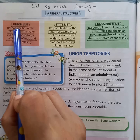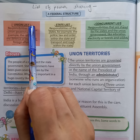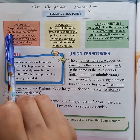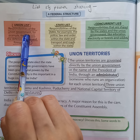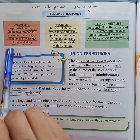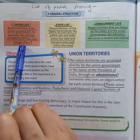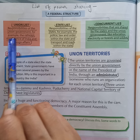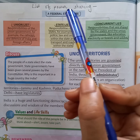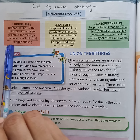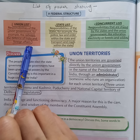The Union List contains the responsibilities of the Union Government or the Central Government. What are the subjects in the Union List? Answer: the subjects of the Union List are the Railways, the Defence of India, and Foreign Affairs.